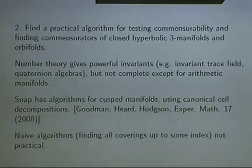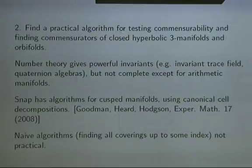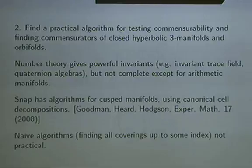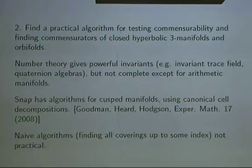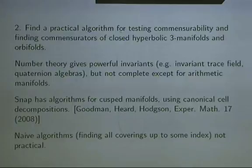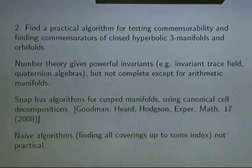So it's like the idea of Dirichlet domains. If you're given a discrete group, you take a point, take the orbit of that point under the group, and divide the space into regions where each point is associated with the nearest orbit point — this is a Dirichlet domain, giving a cell decomposition or triangulation of your manifold. For these cusp manifolds, you start with the collection of horroballs in the universal cover, divide it into regions by nearest horroball, and the boundary of these regions is some kind of two-complex, often called the Ford two-complex, giving a canonical cell decomposition.